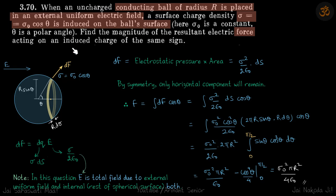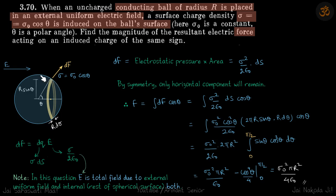We have done such problems before, so we directly use the result that sigma equals sigma-naught cos theta. We need to find the force acting on the induced charge of the same sign. The net force on the total ball is zero, so we consider only the right half, which has the positive charge.